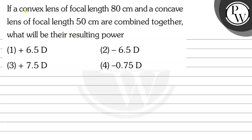Let us read the question. The question says: if a convex lens of focal length 80 cm and a concave lens of focal length 50 cm are combined together, what will be their resulting power? Option 1: 6.5 diopter. Option 2: minus 6.5 diopter. Option 3: plus 7.5 diopter. Option 4: minus 0.75 diopter.